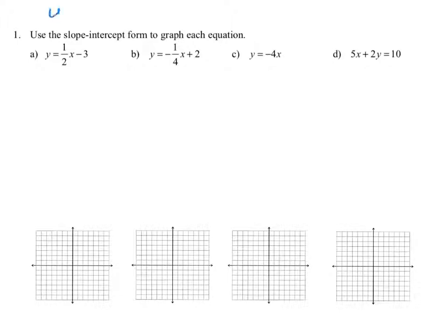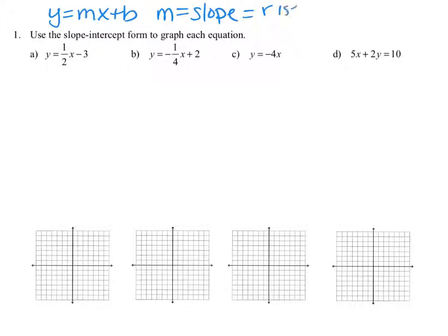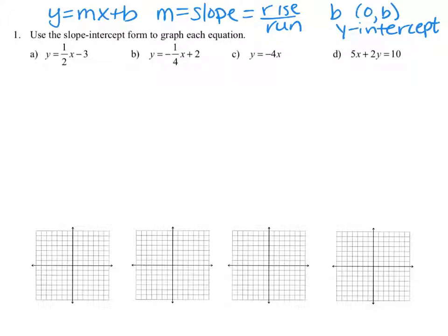Use the slope-intercept form to graph each line. Remember that the slope-intercept form is y equals mx plus b, where m is equal to the slope of the line — slope is interpreted as the rise over the run — and b is the y-intercept, in other words the point (0, b) is the y-intercept.